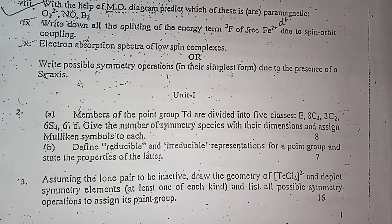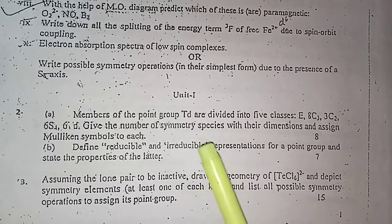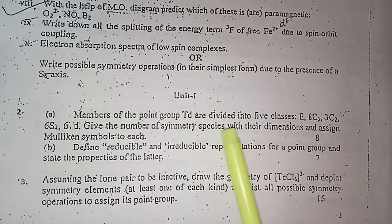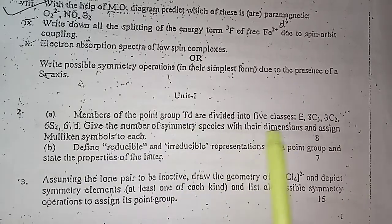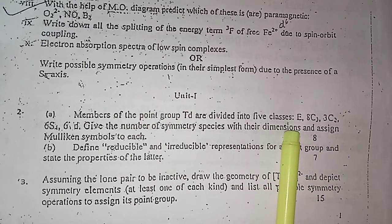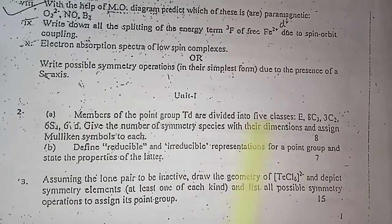In the first unit, the first question has been asked: Members of the point group Td are divided into five classes. It has been given over here.